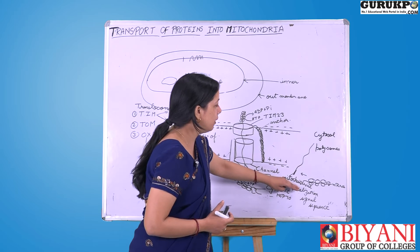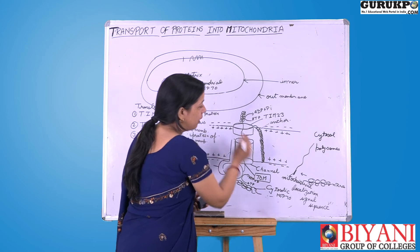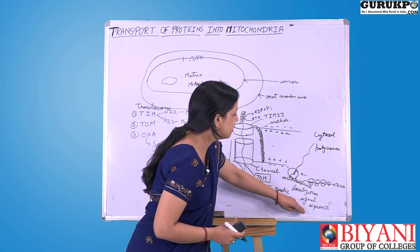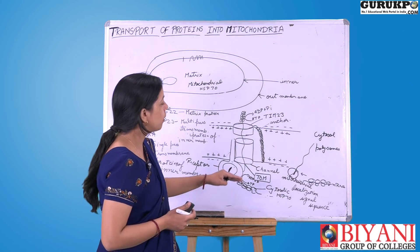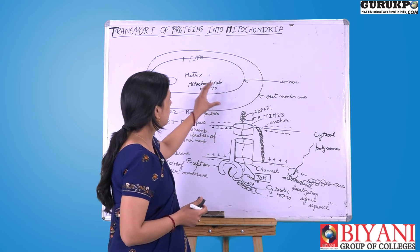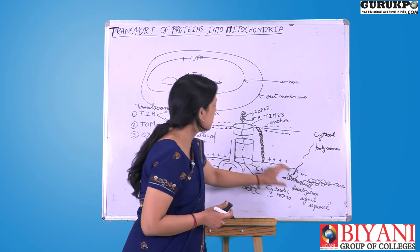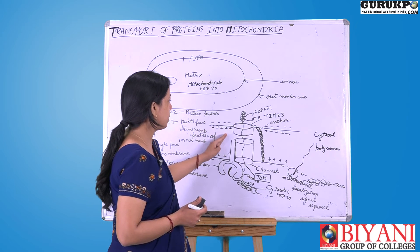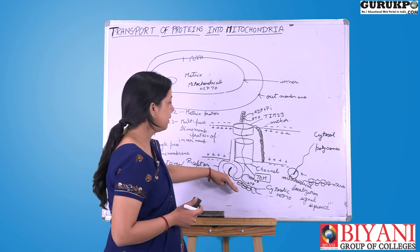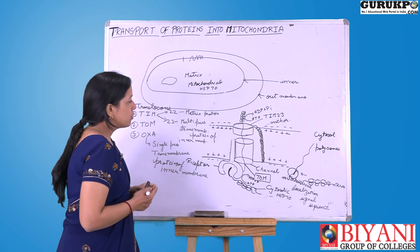This mitochondrial protein contains a particular sequence known as the mitochondrial localization signal sequence. This signal sequence localizes and transports the protein to the mitochondria. The signal sequence is recognized by receptor proteins present in the mitochondrial membrane, which identify that this protein is meant for the mitochondria.